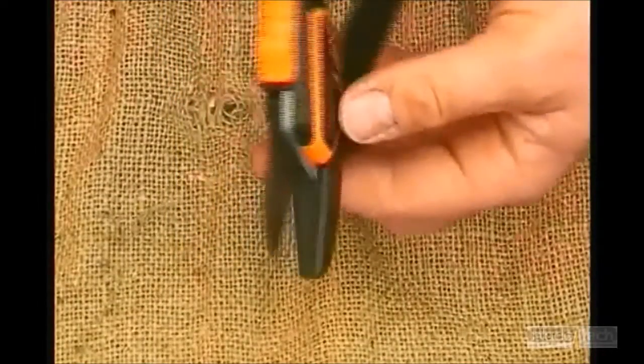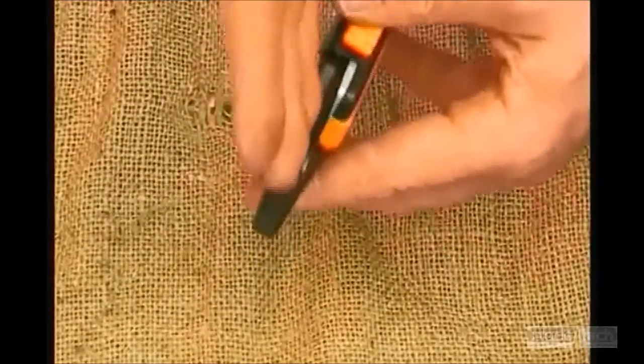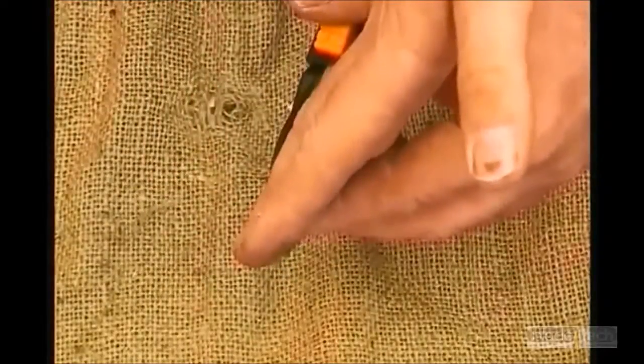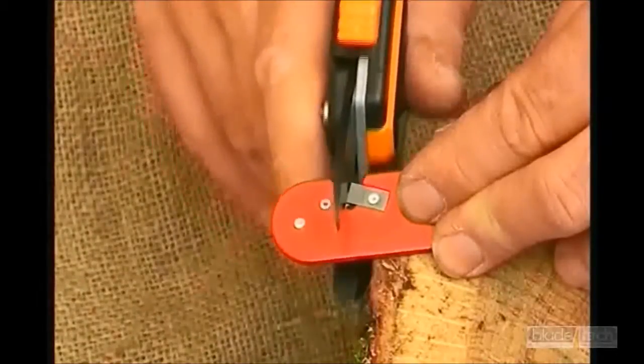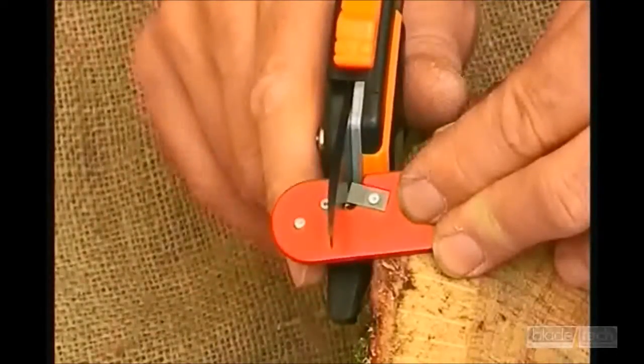Anvil secateurs have a bevel on both sides of the blade. In this case the blade should be placed in the center of the V in the Bladetech so that both sides of the blade are reshaped and sharpened.